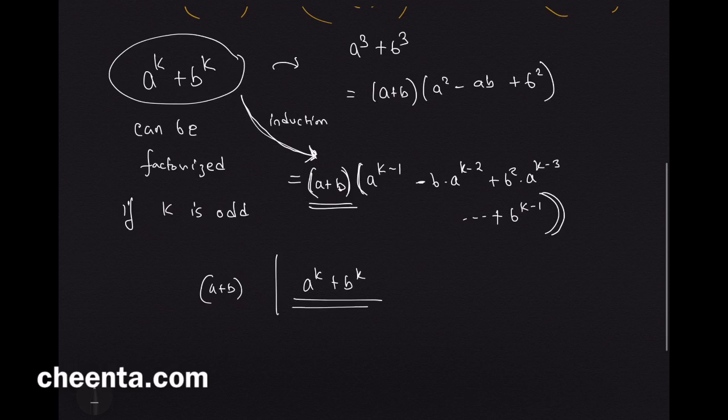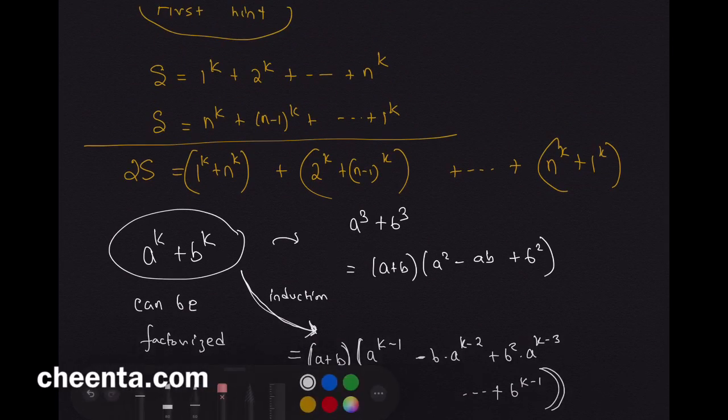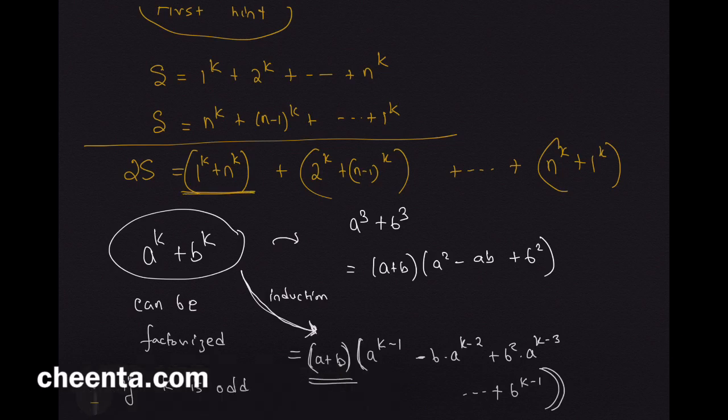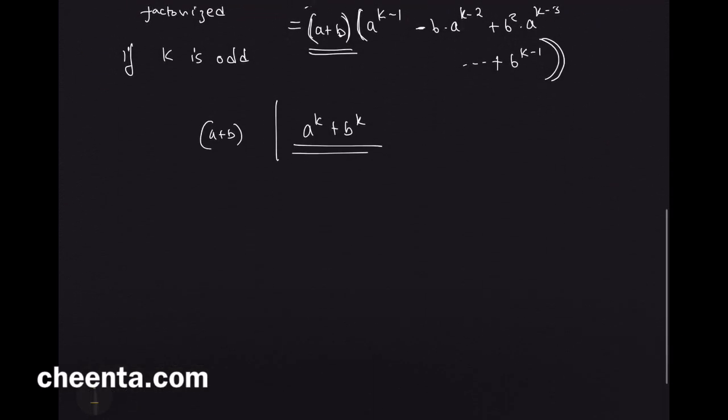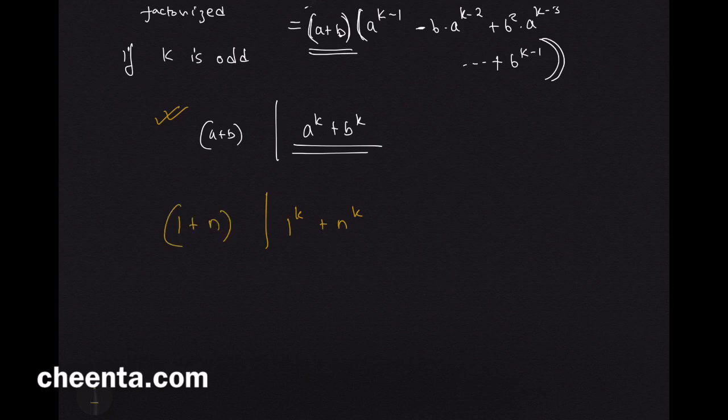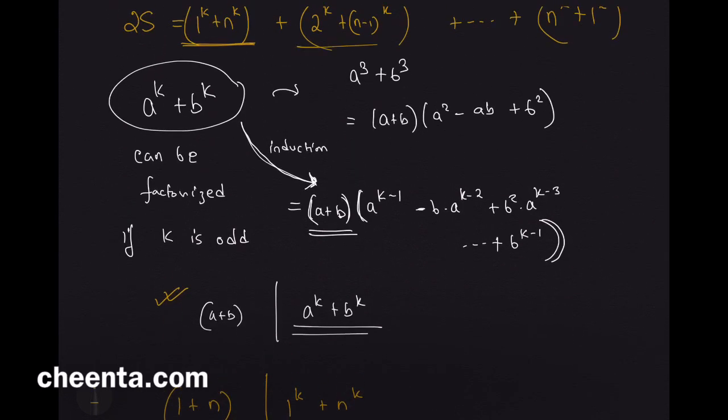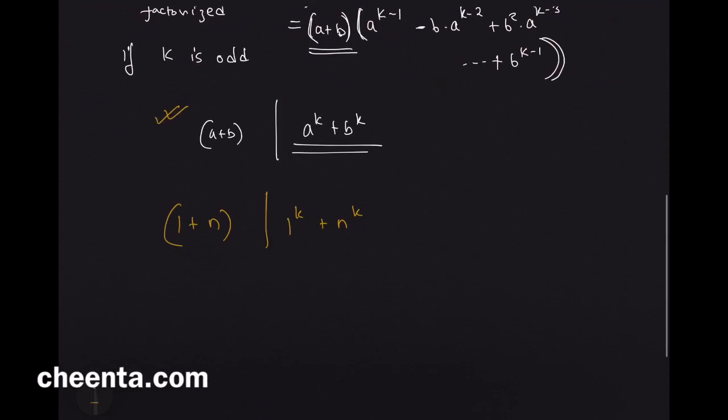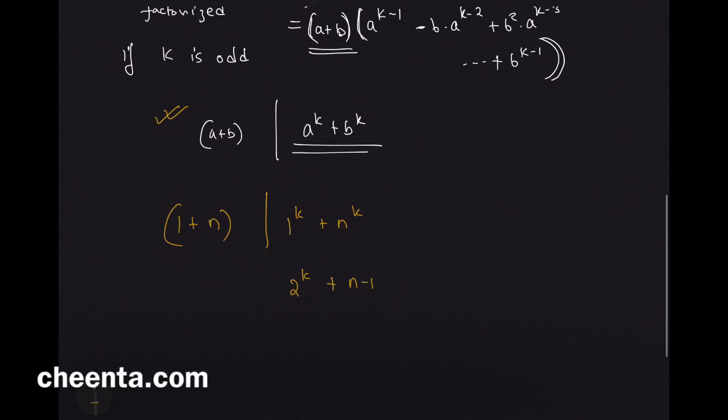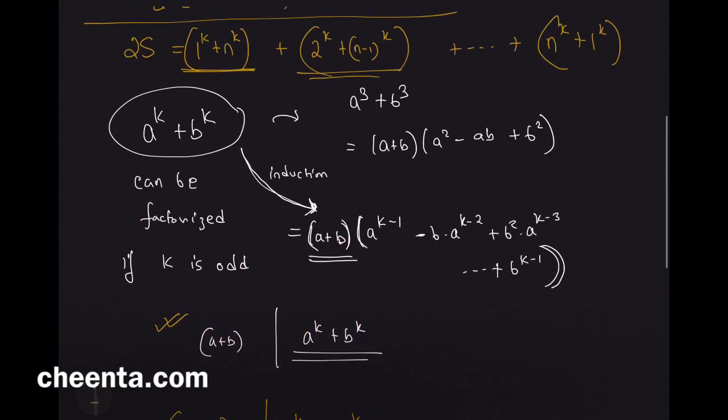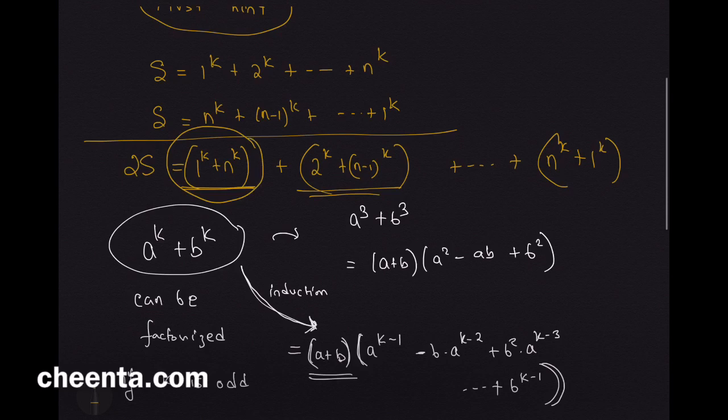And this will be heavily used here because each of these quantities 1 to the power k plus n to the power k using this formula is divisible by 1 plus n. Similarly, if you look at the second piece here, 2 to the power k plus n minus 1 to the power k is divisible by 2 plus n minus 1. This is also n plus 1. So, each of these blocks is divisible by n plus 1.